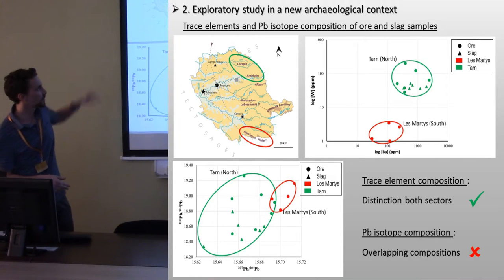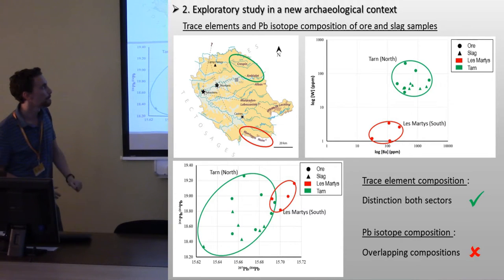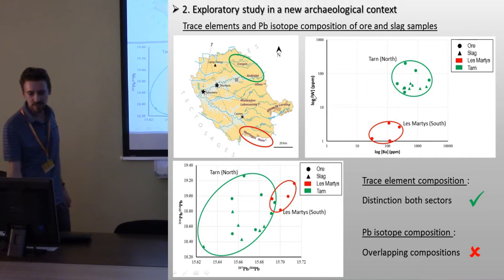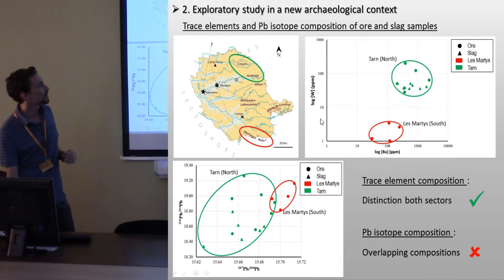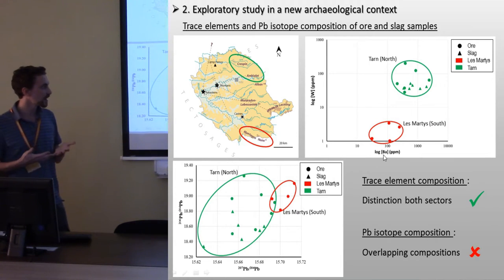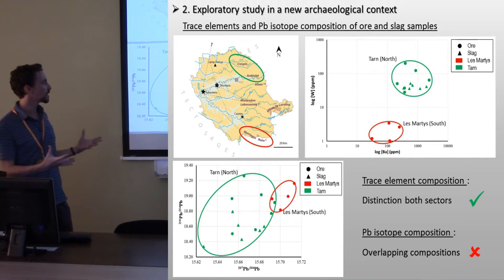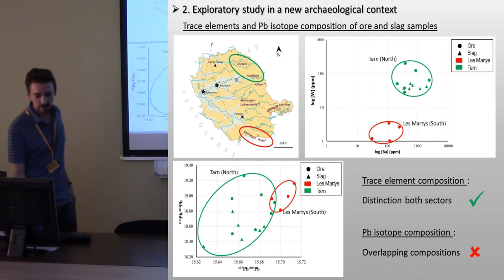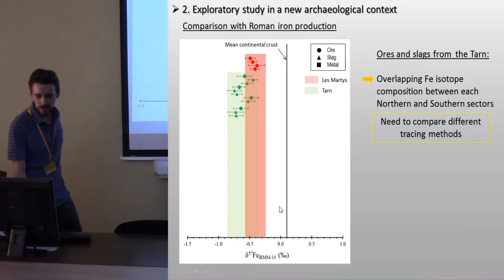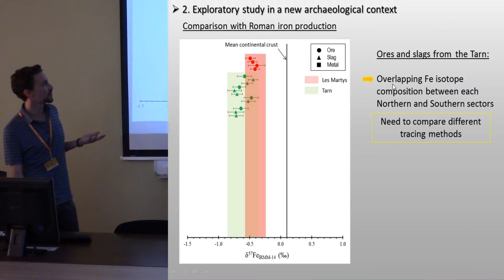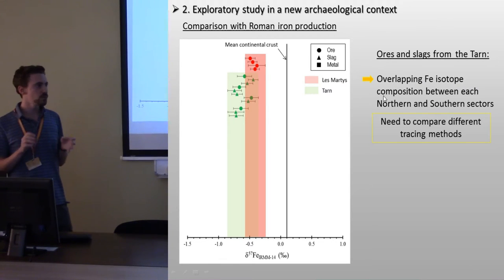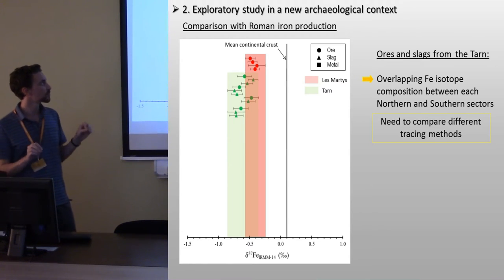As you can see, trace element composition allows distinguishing these two sectors, for example with the tungsten and barium composition. But this is not the case with lead isotopic composition, because of the highly heterogeneous composition of materials from the Tarn and the partly overlapping composition of both sectors. Concerning the iron isotopic composition of these two sectors, we can see that they are also overlapping. This shows the need to use different tracers in order to well constrain the signature of different production regions.